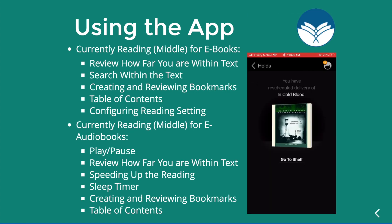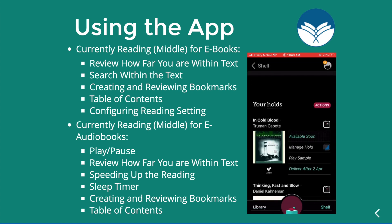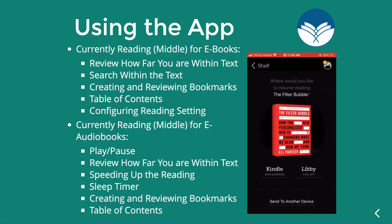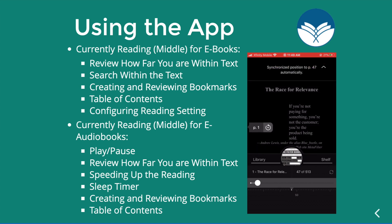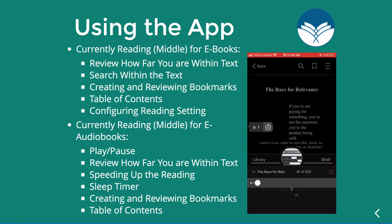Now I'm going to show you how to use the currently reading section for ebooks you've already downloaded. If I go to my shelf and select The Filter Bubble — what I'm currently reading — it gives you the option to send it to your Kindle device if you have one, or you can read it directly in the Libby app. I'll select that and it'll bring me up to where I was currently reading.